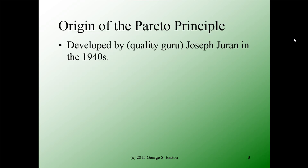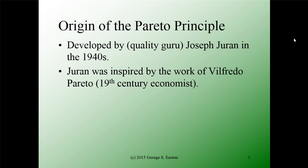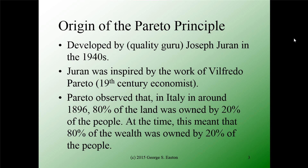The Pareto Principle was developed by quality guru Joseph Juran in the 1940s, so it's been around a long time. Juran was inspired by the work of Pareto, a 19th century economist. What Pareto had observed is that in Italy around the end of the 1800s, about 80% of the land was owned by about 20% of the people — meaning about 80% of the wealth in the country was owned by 20% of the people.